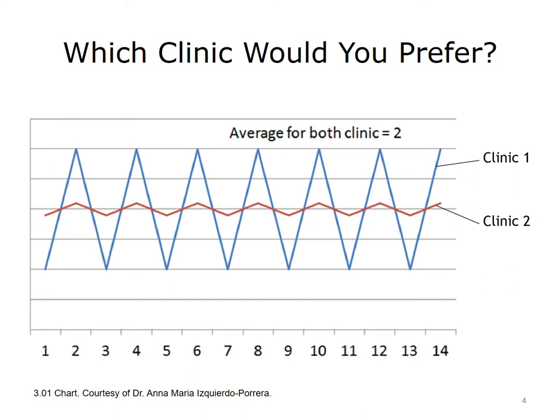The graph shows the progression of the two clinics. Clinic 1 has a wide range of outcomes, from 1 to 3, while Clinic 2 has a narrow range of outcomes, from 1.9 to 2.1.